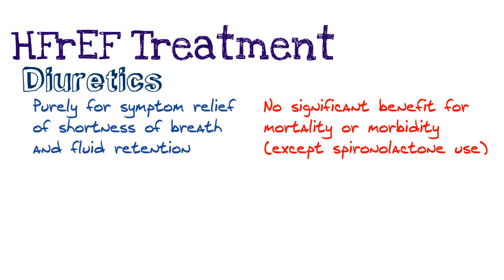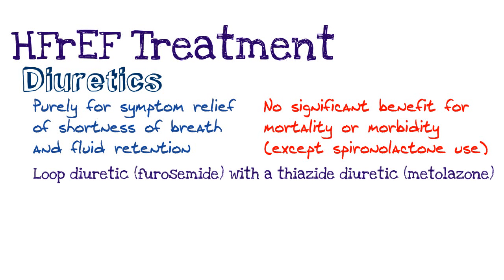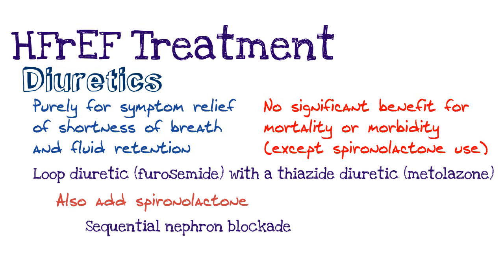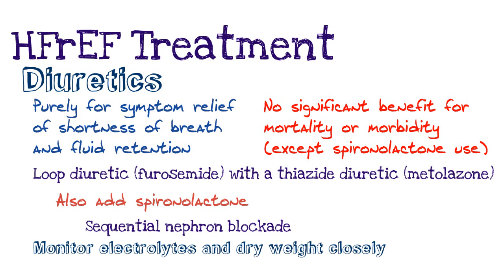In terms of diuretics, we generally add them on in a stepwise approach. You can start with a loop diuretic like furosemide, use a thiazide diuretic like metolazone, and then if needed add spironolactone. This is called sequential nephron blockade — you're essentially blocking the nephron at different stages to promote water loss. When patients are on diuretic therapy, you need to monitor their electrolytes — sodium and potassium — as well as creatinine and kidney function, and monitor their weight to make sure they're improving.